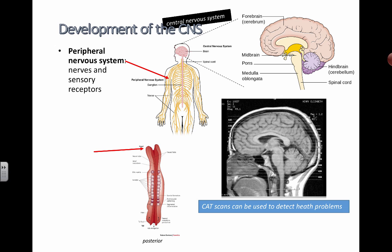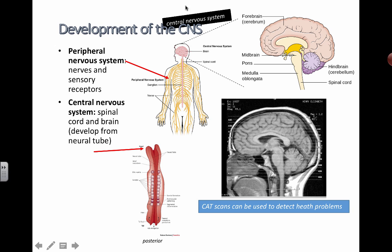The peripheral nervous system contains the nerves and different types of sensory receptors, which will also be listed in a subsequent unit on the different types of stimuli that can signal your system and help your system understand more about the environment around you. The central nervous system just consists of the brain and the spinal cord.